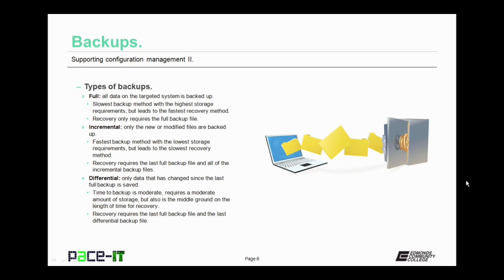Then there's the incremental backup. With this type, only new or modified files are backed up. This is the fastest backup method with the lowest storage requirements, but it also leads to the slowest recovery method. The recovery process with incremental backups requires the last full backup file and all of the incremental backup files.